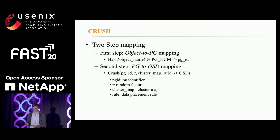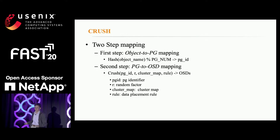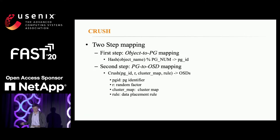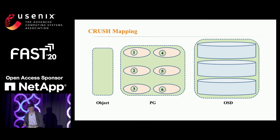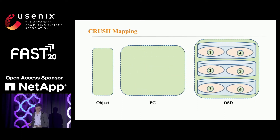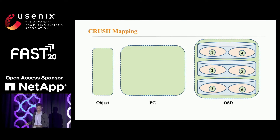CRUSH performs two-step mapping from objects to their storage OSDs. First, objects are categorized into placement groups, termed PGs, by computing the modular of the hashing of object names — i.e., PGID equals hash of name modulo the PG number. Second, the PGs are mapped to N OSDs following the CRUSH algorithm; for example, M equals 3 representing three-way replication. Statistically, the number of objects stored in OSDs is linearly related to the OSDs' weight, which can be assigned by system administrators. This slide demonstrates this two-stage mapping from objects to PGs, and then from PGs to OSDs.